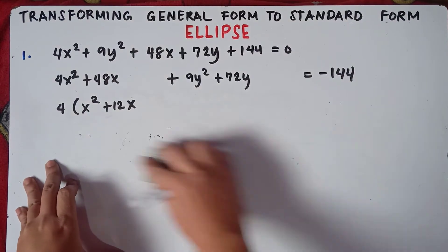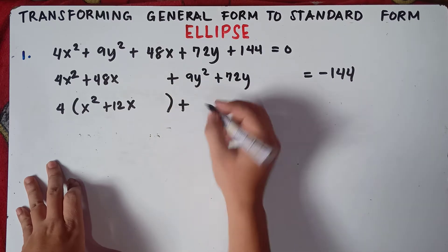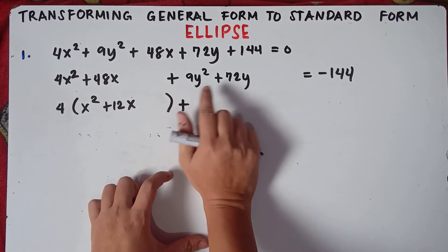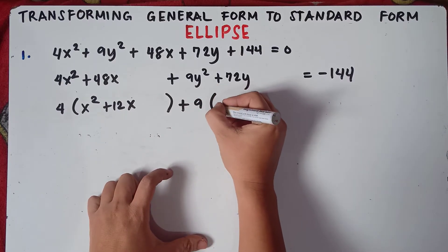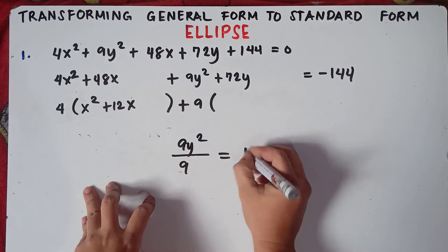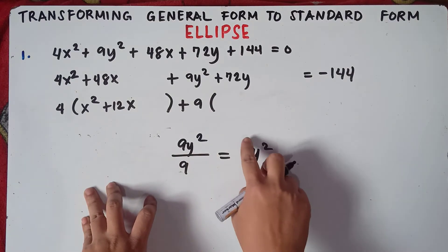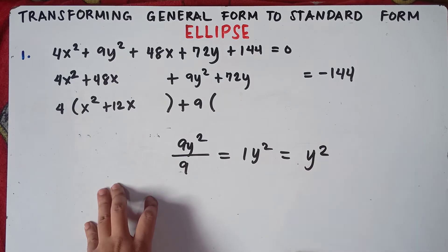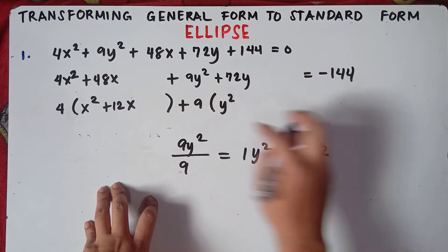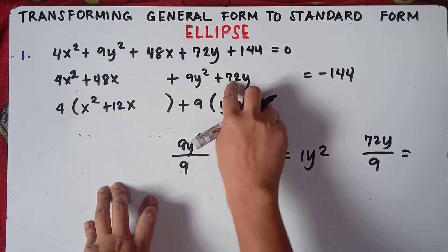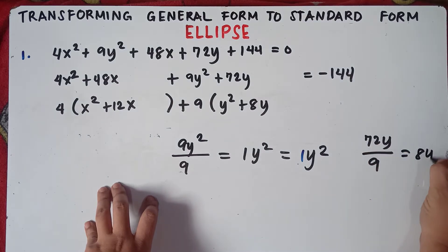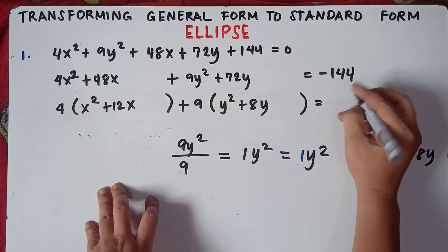So you factor this out, put parenthesis, then copy plus sign. Can we factor 9 and 72? Yes, we can factor this out by 9. We can divide 9 by 9 and we can also divide 72 by 9. So copy 9, then you put parenthesis. 9y squared divided by 9: 9 divided by 9 is 1, then copy y squared. And divide 72y by 9: positive 72 divided by positive 9 is positive 8, so 8y. Then put a space, then equals, then copy negative 144.